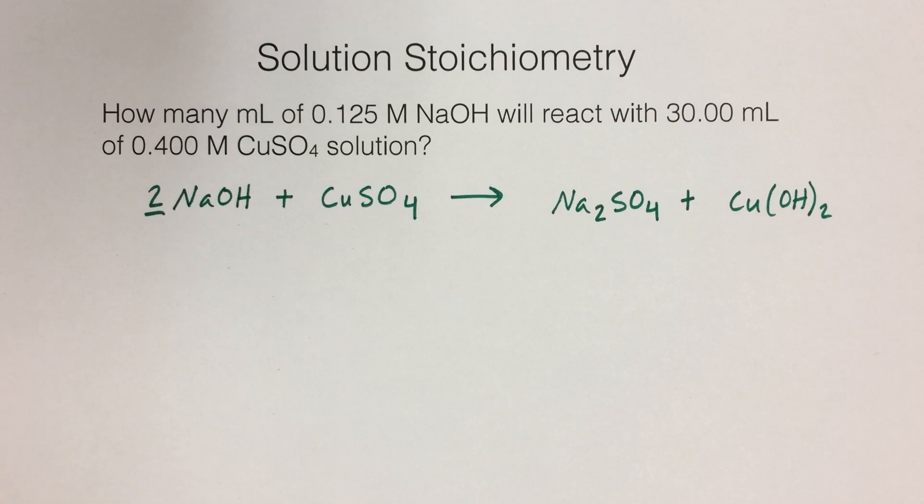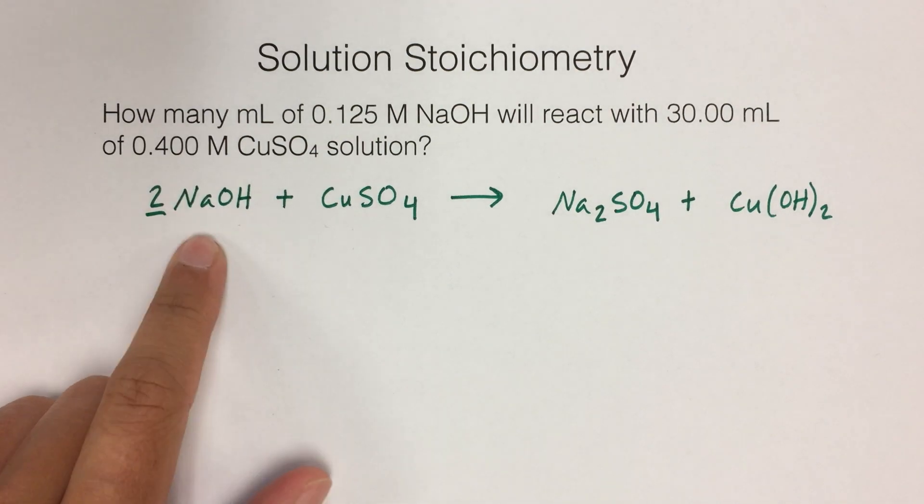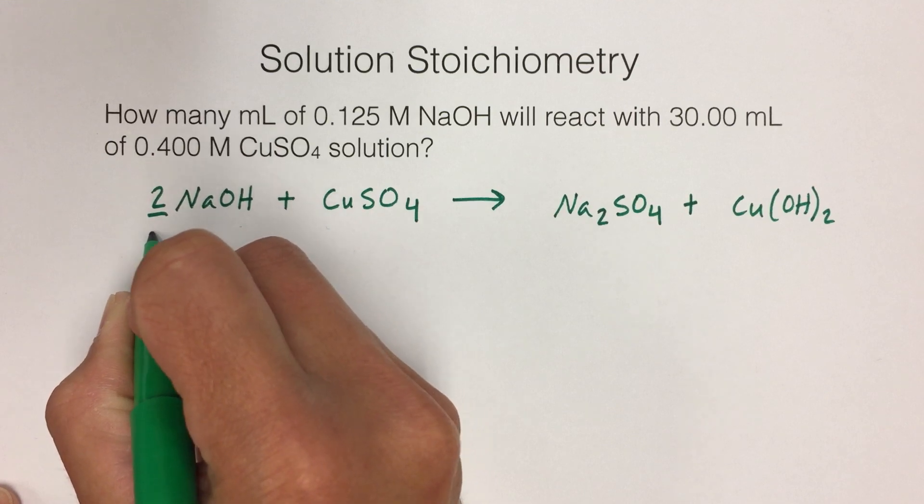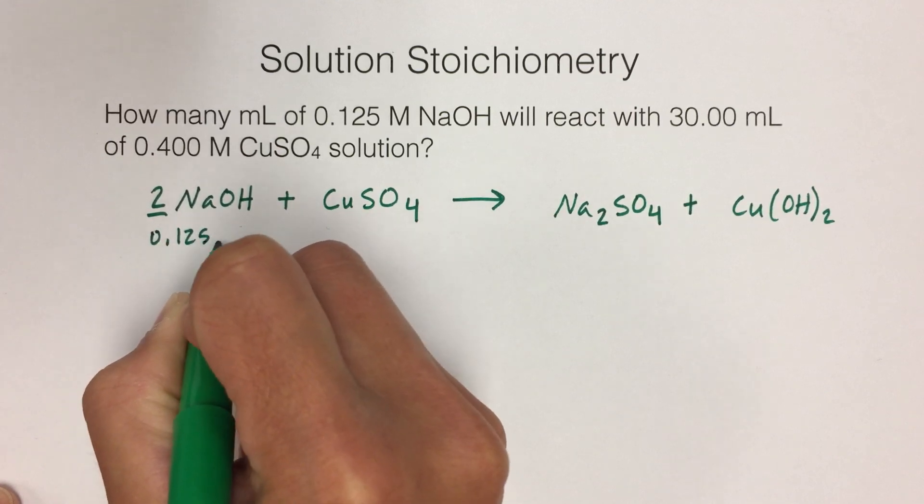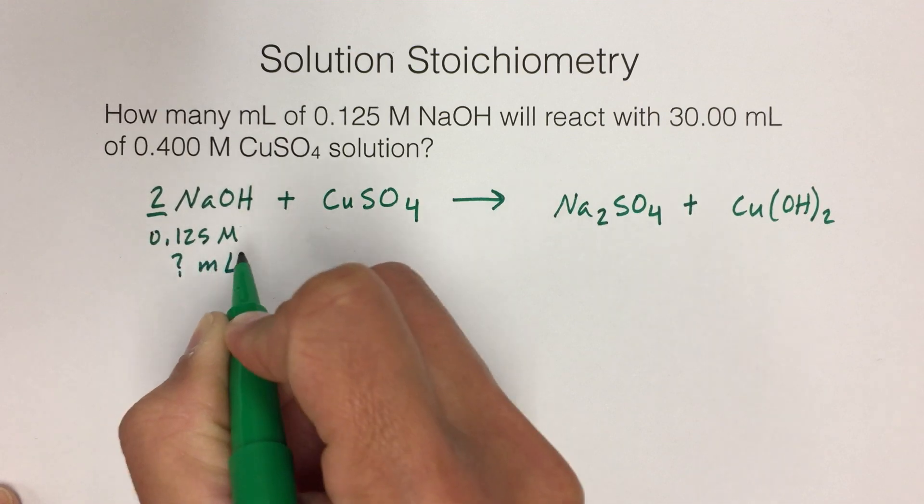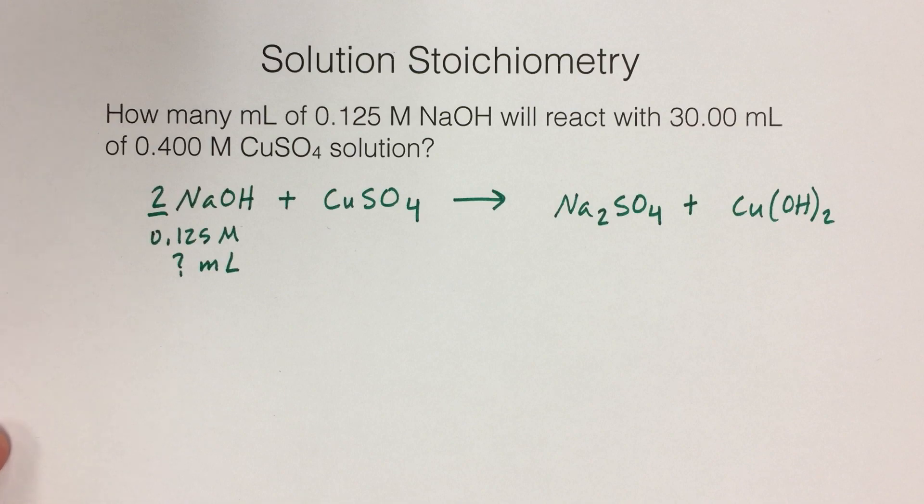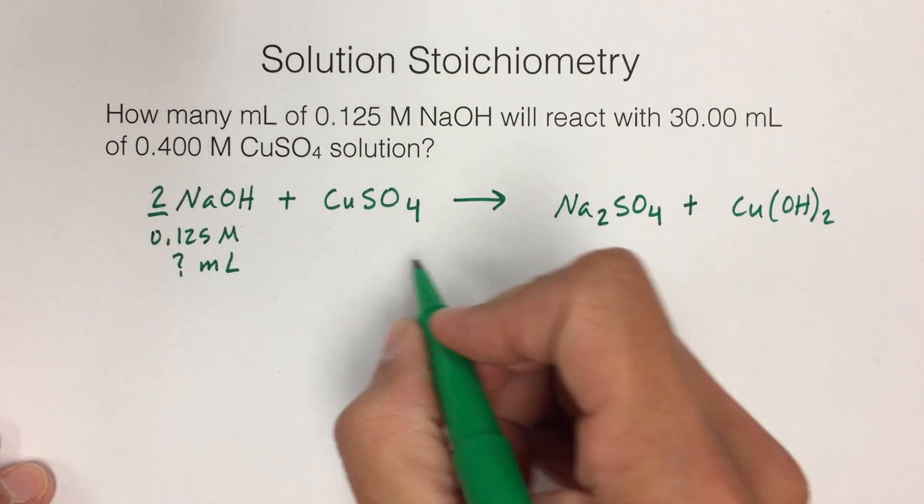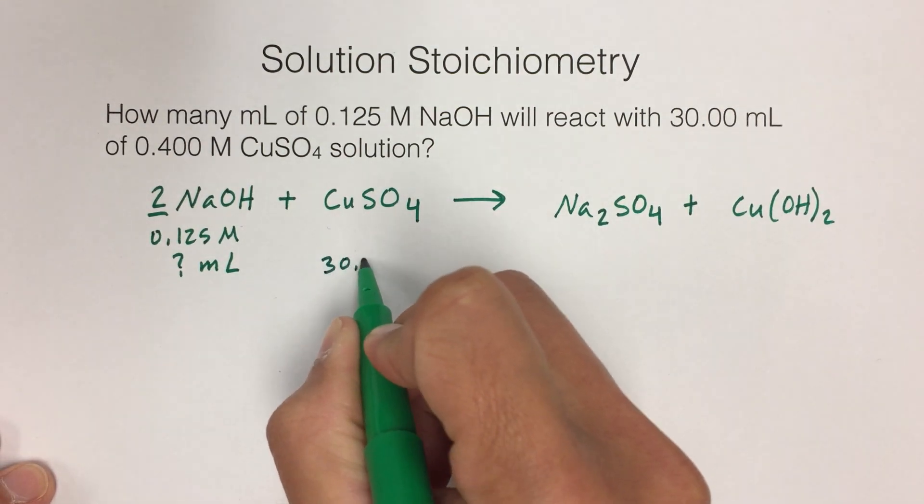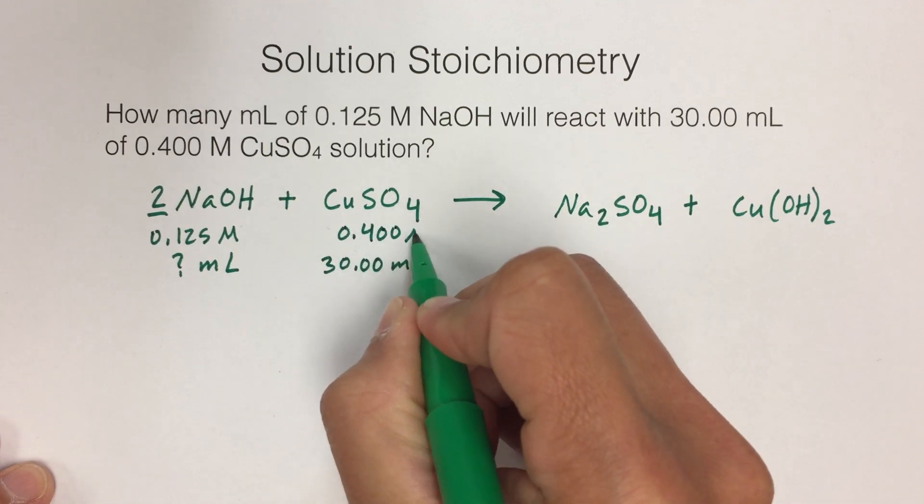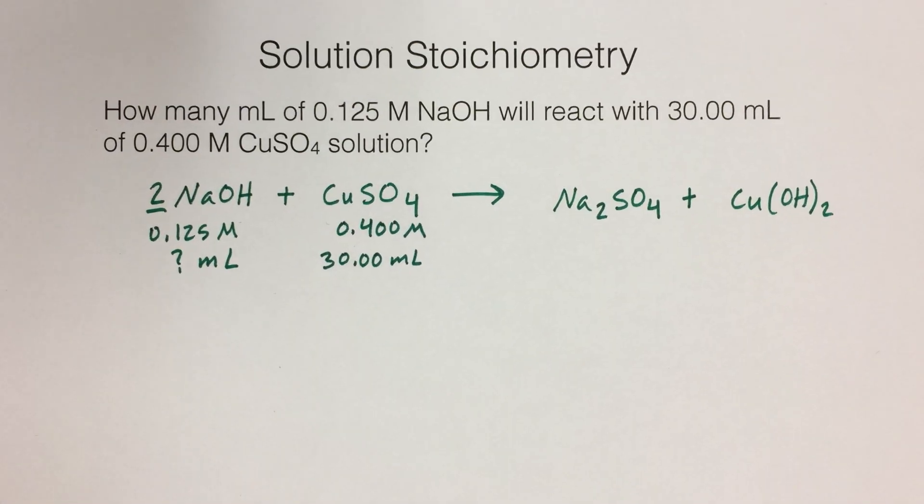Then what I like to do is label the information that was given to us. So how many milliliters of 0.125 molar sodium hydroxide? We have 0.125 molar, but we don't know how many milliliters. Question mark, milliliters. And then it says react with 30.00 milliliters of 0.400 molar copper 2 sulfate. So I have 30 milliliters of this, and it's 0.400 molar. So there's my info.